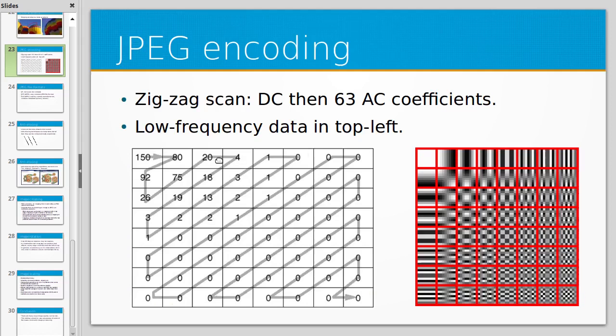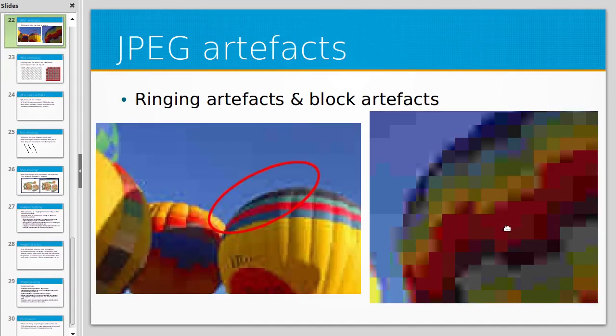And so given a certain number of coefficients, which corresponds to how lossy you want the image to be, you end up combining a certain number of these patterns to approximate the shape that you're trying to represent in that 8 by 8 pixel block.